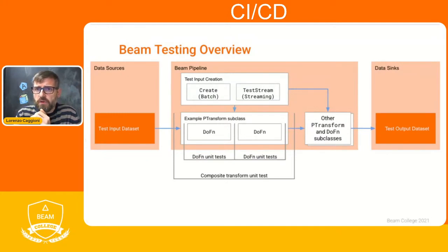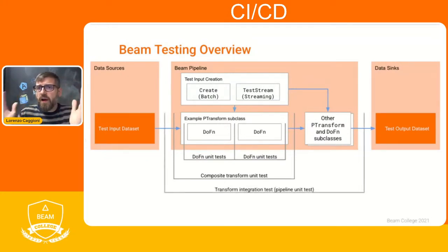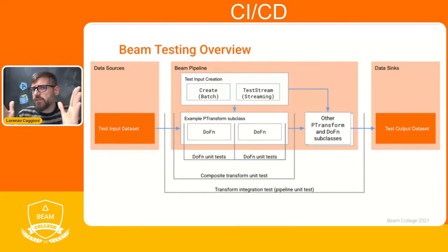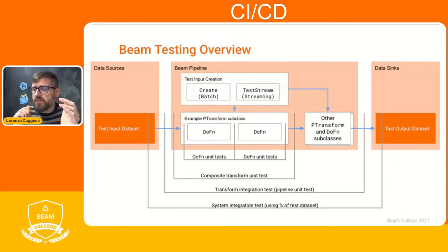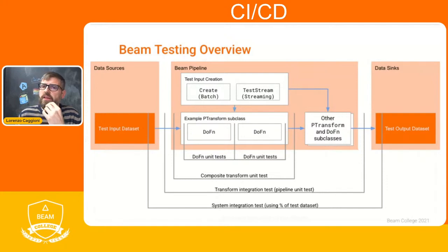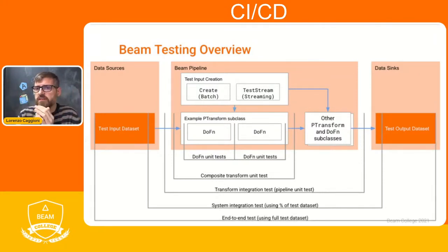One more layer out, we are encapsulating the entire pipeline but excluding the IO transforms — these are our integration tests, sometimes also called pipeline unit tests. The next step is to incorporate a small amount of test data, probably coming from production data, for system integration tests. These use the actual IOs but only a percentage of the total test data. Finally, we have the end-to-end tests that use a copy of our production data and test the pipeline with the full test dataset.